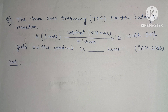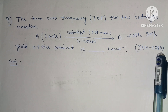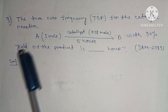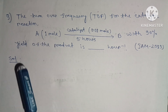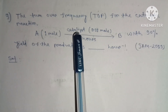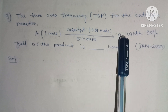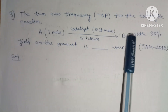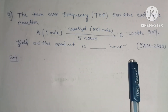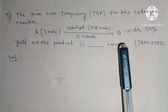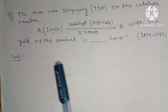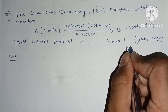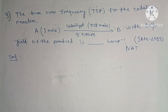Now here is a problem from JAM 2019. The question asks for the turnover frequency for the catalytic reaction A → product. The amount of A is 1 mole, the amount of catalyst is 0.01 mole, the time required is 5 hours, and the yield of the product is 90%. This was an integer-type question for two marks.